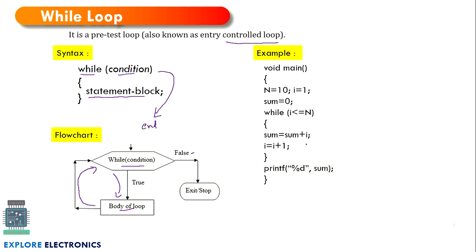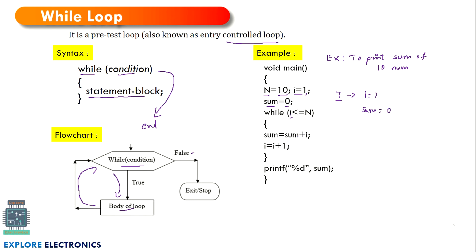We have an example to print the sum of 10 numbers. We have a variable n equal to 10, a counter i initialized to 1, and sum initialized to 0. In the while loop, we are checking if the counter is less than or equal to 10. In the first iteration, counter value is 1 and it satisfies the while condition, so it enters and sum — initially 0 — will be added with the counter value.